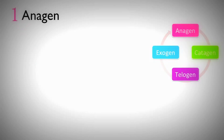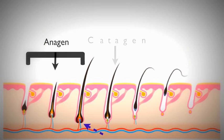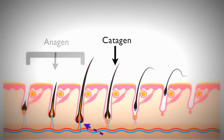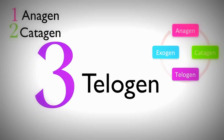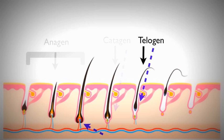The next phase is called catagen. Catagen is just a transitionary phase where your hair bulbs slowly start to pull away from the blood supply. The scalp's blood supply gives our hair the nourishment it needs to grow from the follicle. After catagen, we have telogen, another resting phase. During this phase, the hair receives no nourishment from the blood vessels in the scalp and the hair prepares to fall.